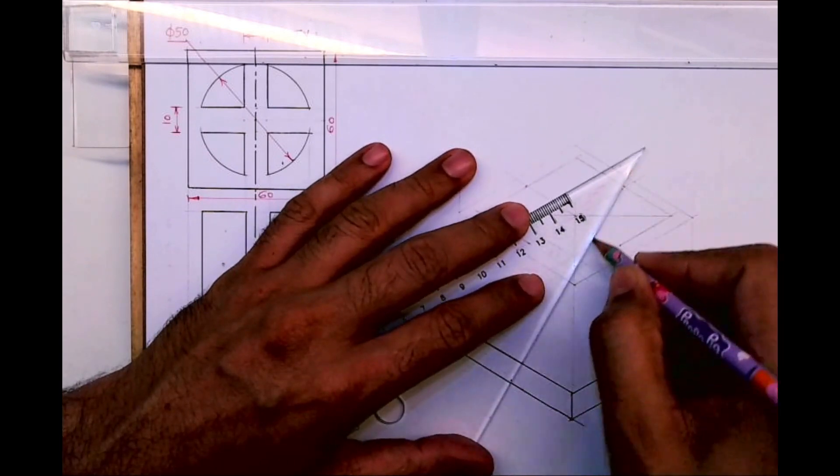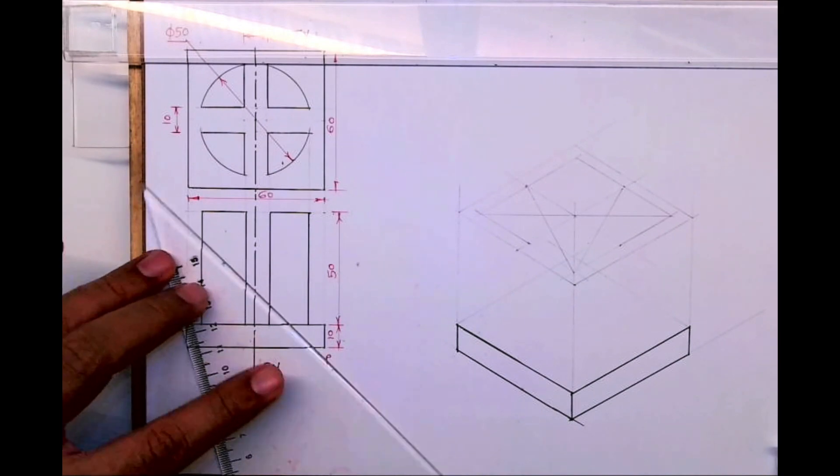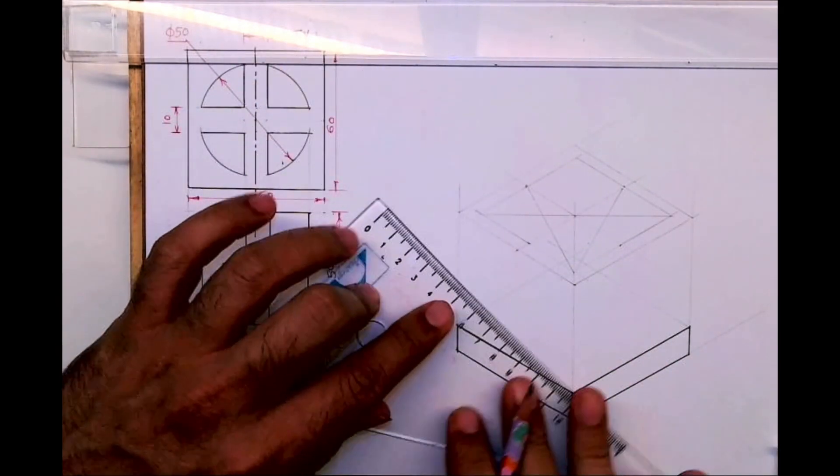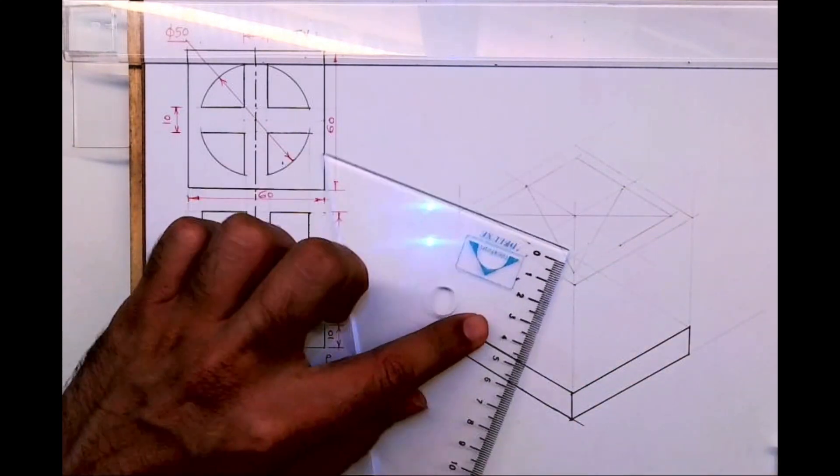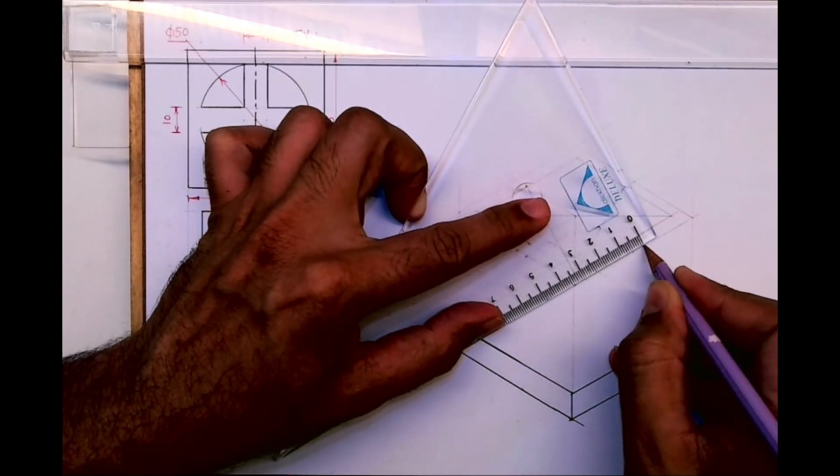Then from one corner, from where angle is more than 90, you join opposite to midpoint. Then you take 55 mm on all the sides because we have a gap - we don't have a proper circle, it is divided into four parts.